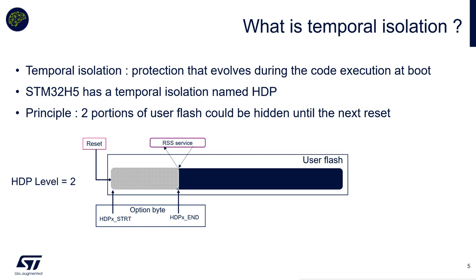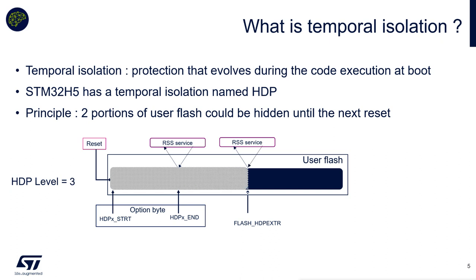When the code is executed in this portion, you can call an API in the RSS services. This will increase the HDP level, and that portion of flash disappears until the next reset — meaning it can't be accessed anymore in any manner. Then, using a flash register, you can define a second portion of user flash. Again, code executes there and calling RSS services increments HDP to level 3, and the second portion of flash disappears.